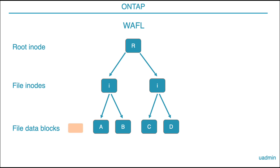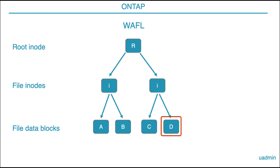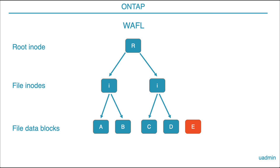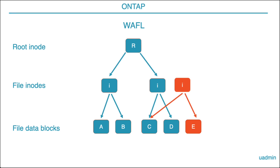At the bottom we have the data of a file, which is reachable via pointers in the inode, which in turn is accessible via the root inode. We see two files, and each file has two blocks of data. So imagine we want to change D into E — in WAFL, the block D is not modified or touched in any way. The only thing that happens is that E will be written to a new location on disk. And since E is the replacement for D, the pointer in the inode should be modified. However, WAFL never updates a block but always writes new blocks, so there will be a new inode with pointers to C and E.